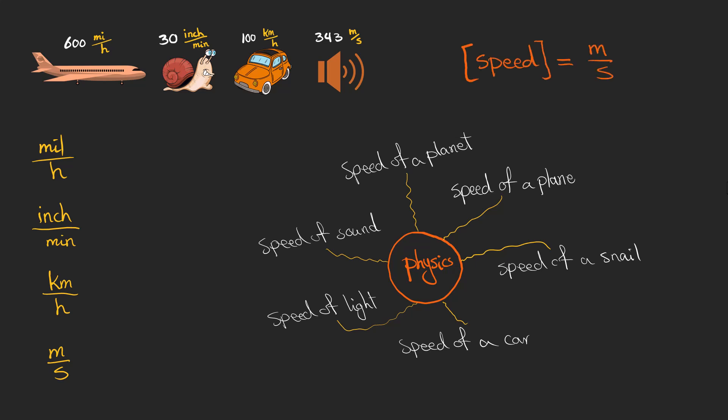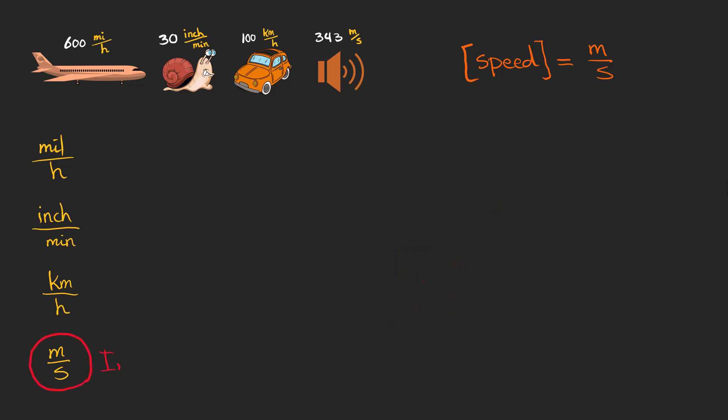This standard scale or unit or dimension for speed is meters per second. And it's very important to know how we can express different scales in meters per second.